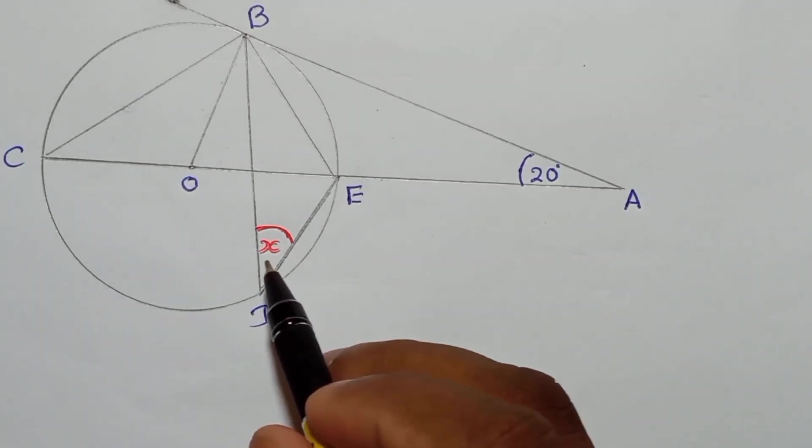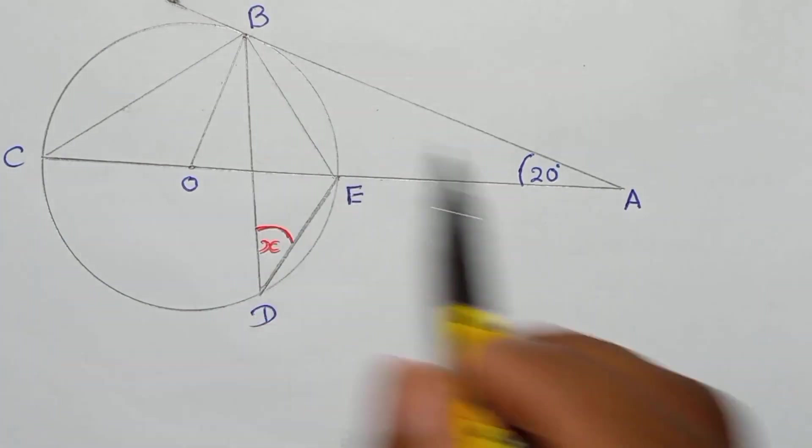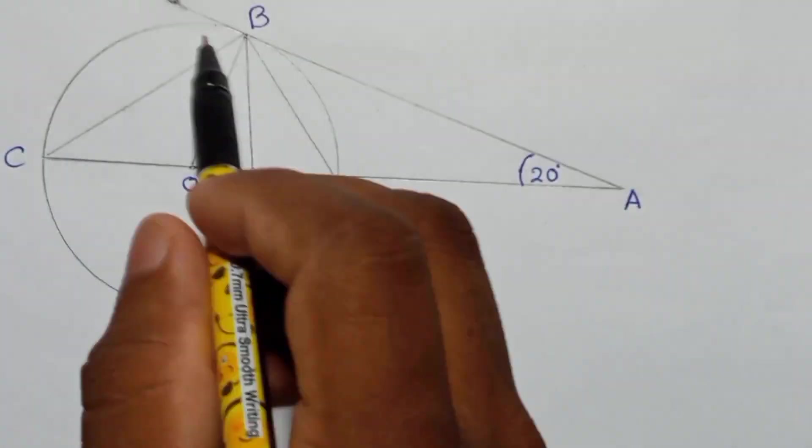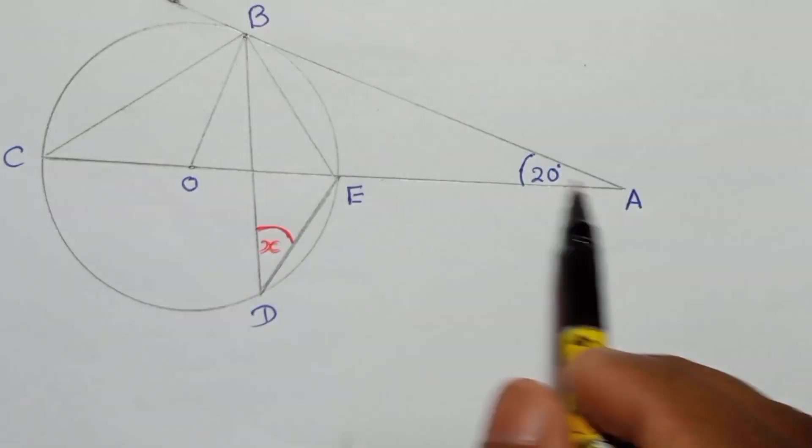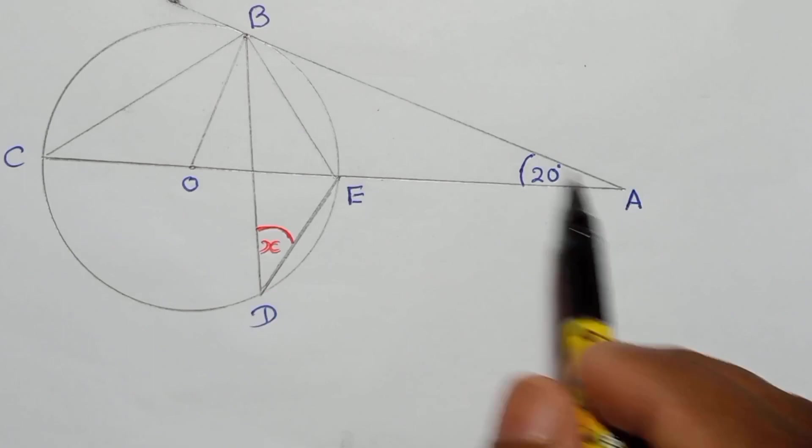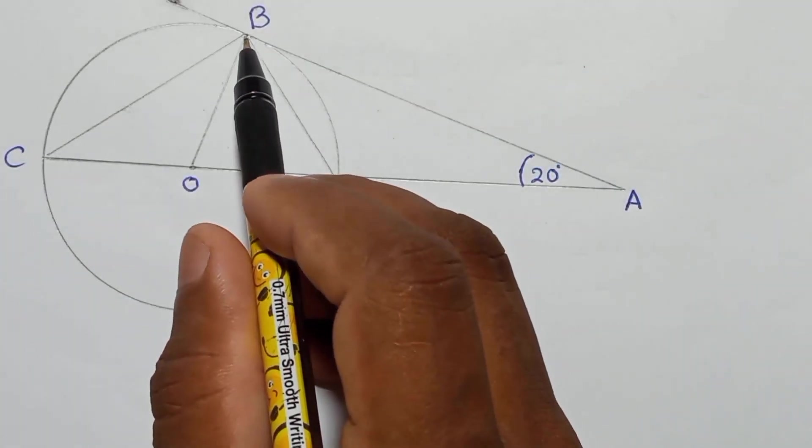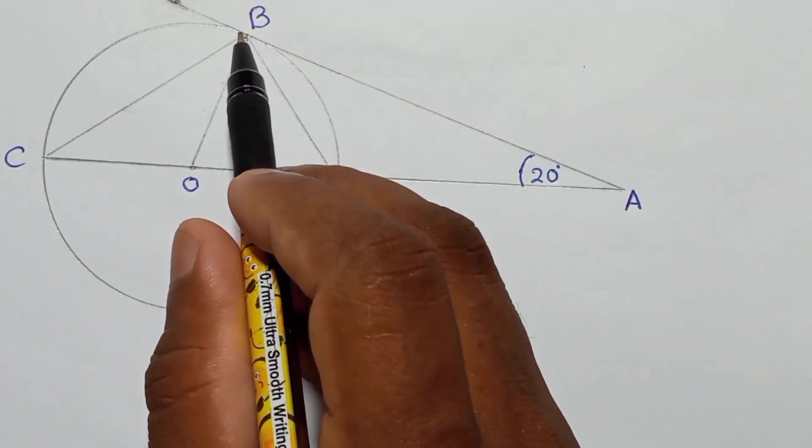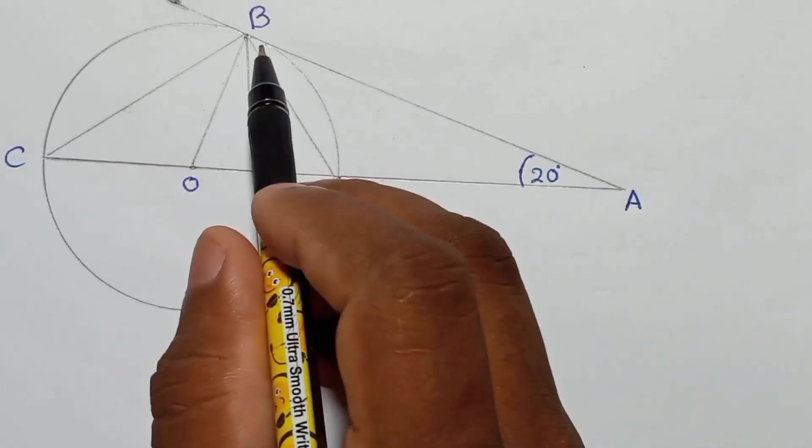Here we need to find the value of x. Now, they tell us that AB is a tangent. Let me explain a little bit about tangent. A tangent means a straight line drawn to exactly one point on the circumference of the circle.